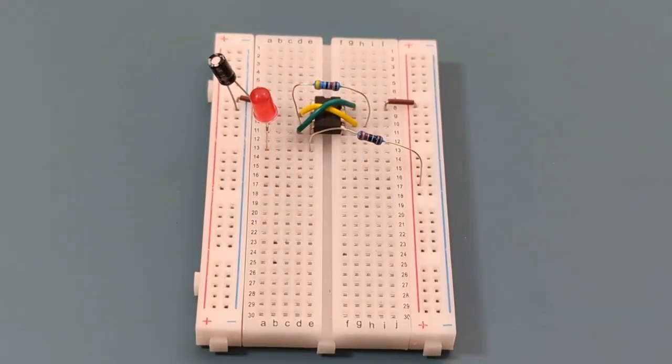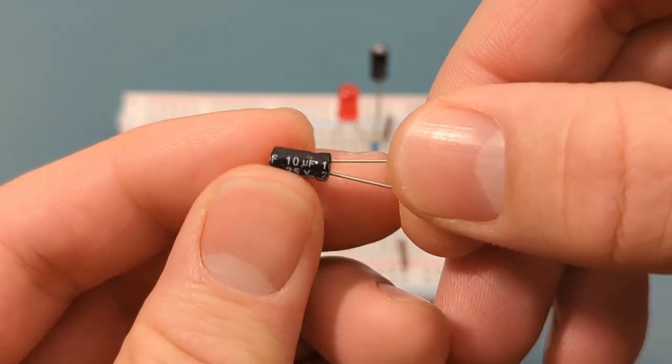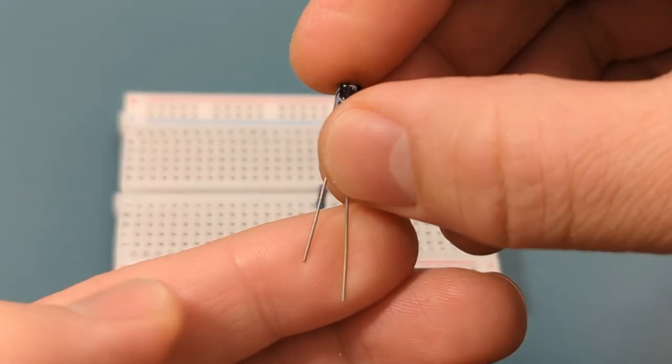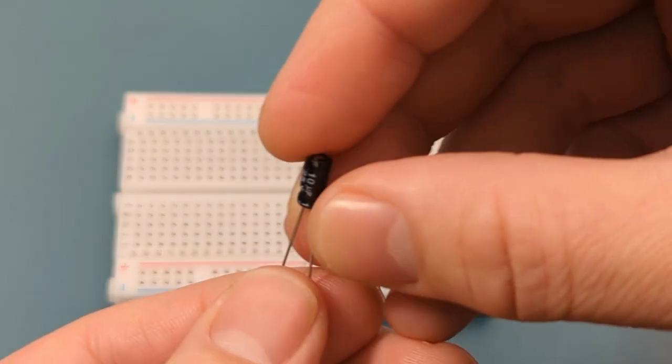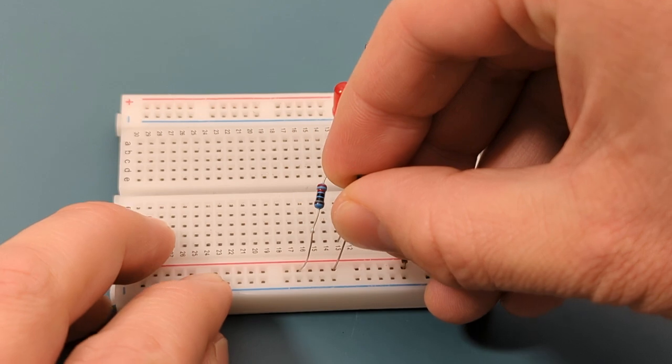Turn the breadboard to the side. Insert one leg of a 10 microfarad capacitor into the positive rail and the other leg three rows above the 220 ohms resistor. Insert the longer leg into the positive rail.